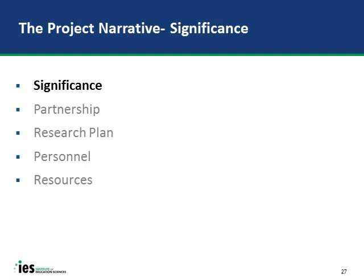Now I'll go through the sections of the Project Narrative. The Project Narrative is the substantive part of your application and contains five sections. Within each section, the Request for Applications sets out both requirements—the minimum you must address for the application to be accepted for review—and recommendations, which are what peer reviewers are asked to look for when scoring the quality of your application. Let's start with the Significance section.